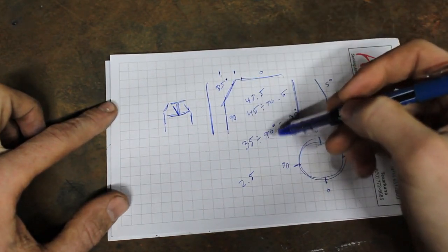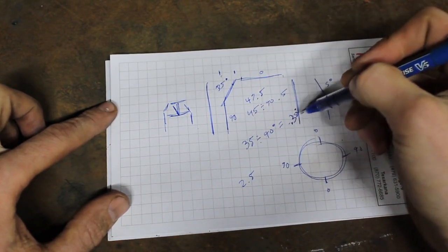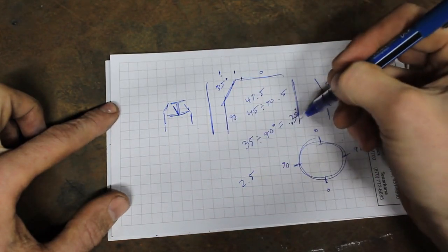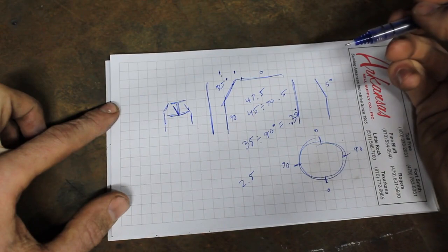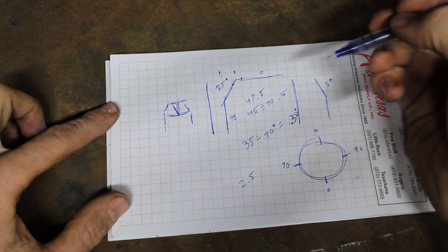So back to our original A pillar here, it's 35 degrees divided by 90. We get 0.38. It's 5 degrees in. We multiply 5 times 0.38. And what is that? That's just shy of 2 degrees basically.